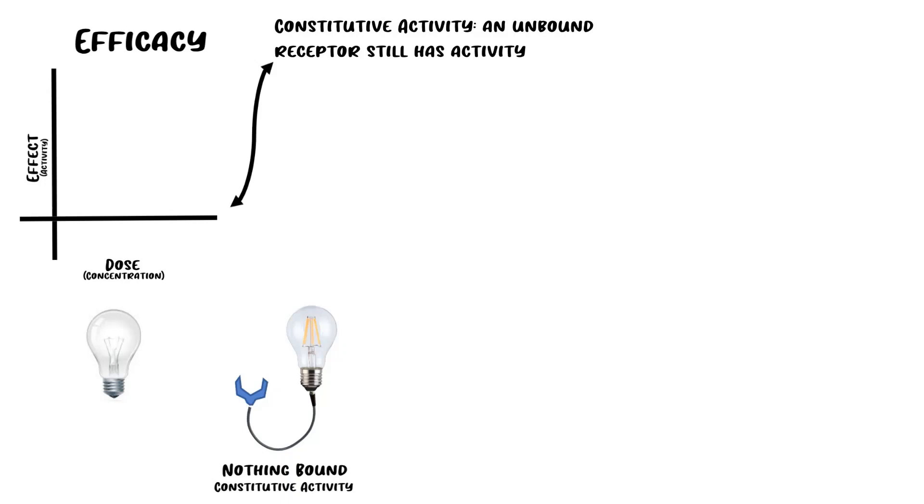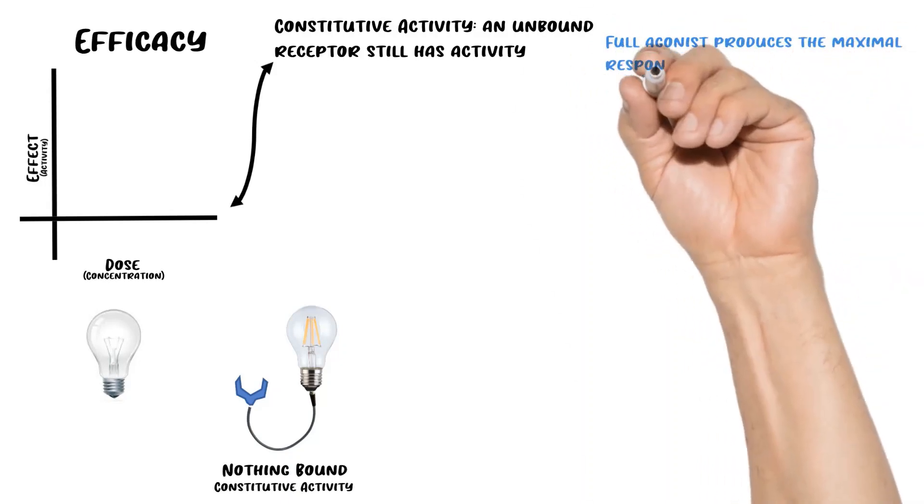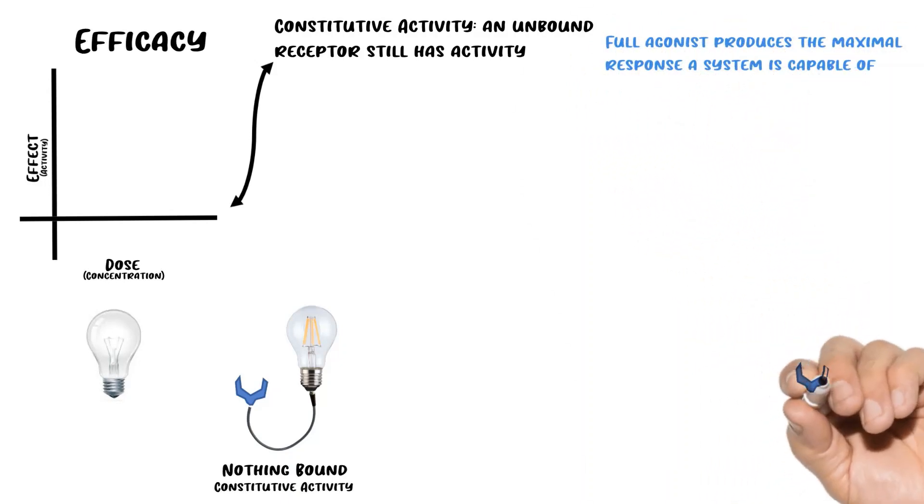Now moving on to full agonists. A full agonist produces the maximal response that a system is capable of. When the receptor is bound by a full agonist and we hook it up to the light bulb, we see that the light bulb is emitting the maximum amount of light that it can emit.